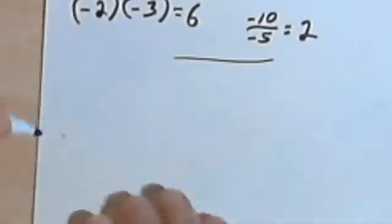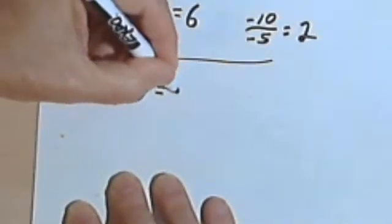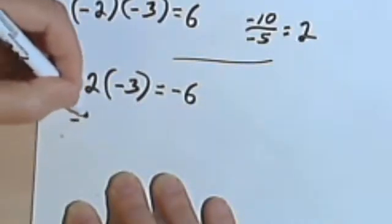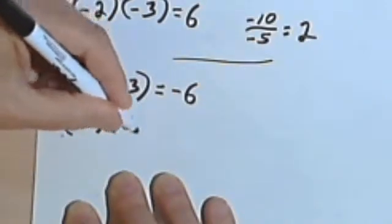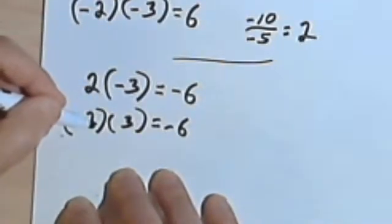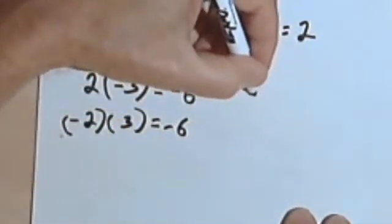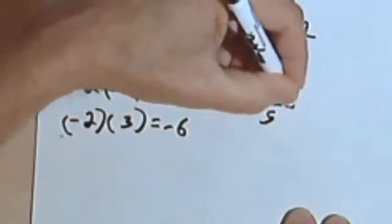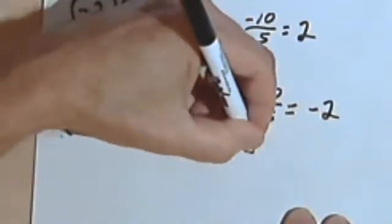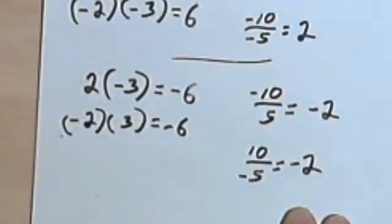When the signs are different, like 2 times negative 3, you're going to get a negative answer. It doesn't matter which sign is negative — negative 2 times positive 3 also gives a negative answer, negative 6. The same thing works for division. Negative 10 divided by 5 gives negative 2, and 10 divided by negative 5 is also negative 2.